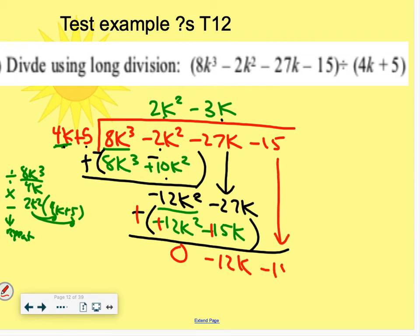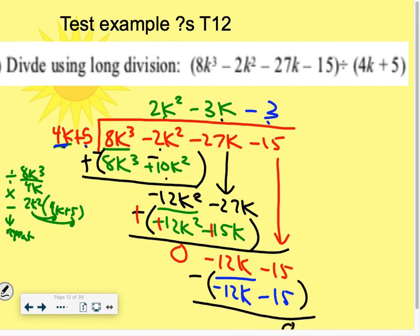Then I bring down, and I'm going to repeat one more time. Negative 12k divided by 4k is negative 3. And multiply that to this binomial. So I get negative 12k minus 15. And then I subtract. And I get a remainder of 0.